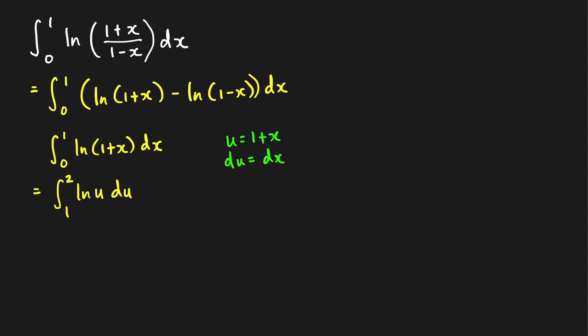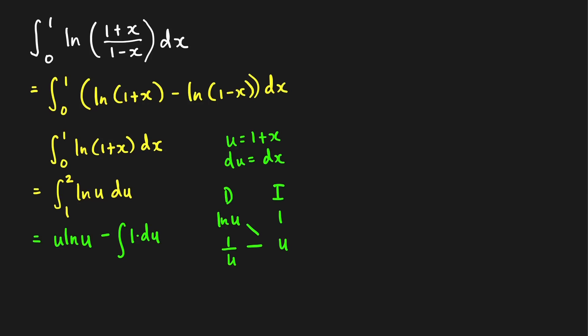For ∫₀¹ ln(1+x) dx, let u equal 1+x, so du equals dx. The limits become 1 to 2, giving ∫₁² ln(u) du. Using the tabular IBP method with ln(u) differentiated and 1 integrated: the antiderivative is u·ln(u) minus u. Evaluating from 1 to 2: (2·ln2 minus 2) minus (1·ln1 minus 1) equals 2·ln(2) minus 1.